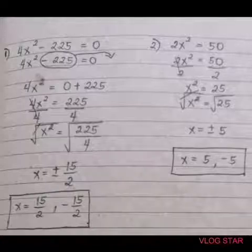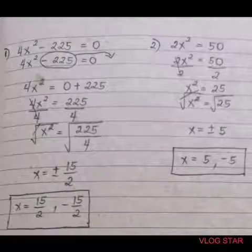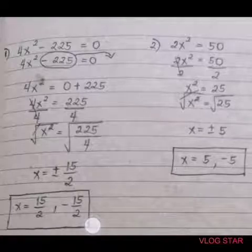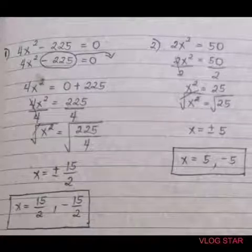Therefore the values of x are 15 over 2 and then negative 15 over 2. Next, 2x² is equal to 50.